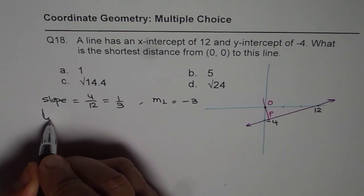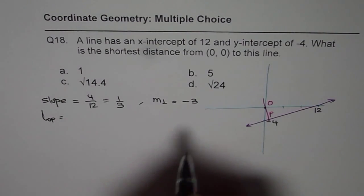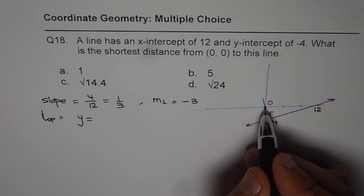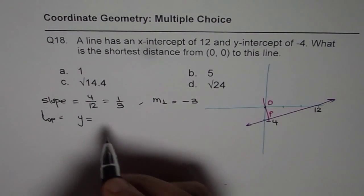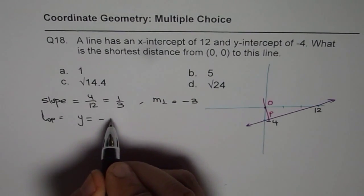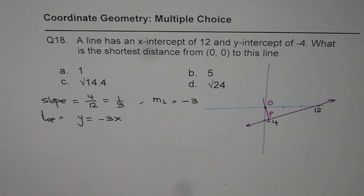So line OP can be given by y equals to, here clearly y intercept is 0 and slope is minus 3. Therefore the equation of this line is y equals minus 3x.